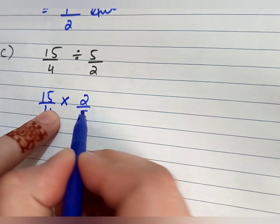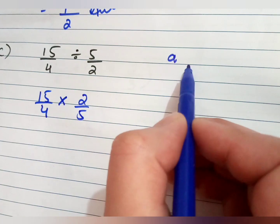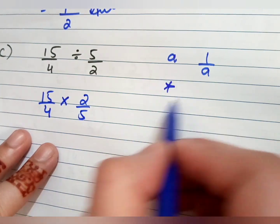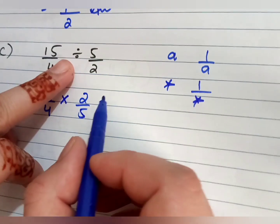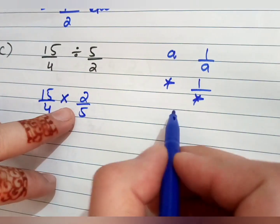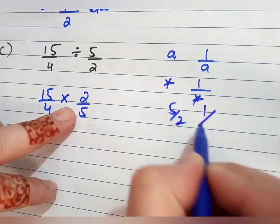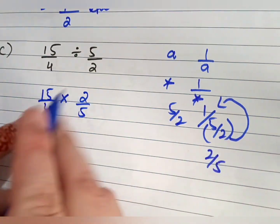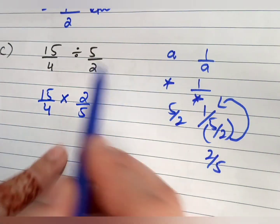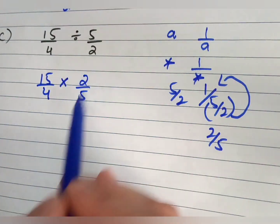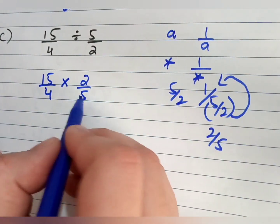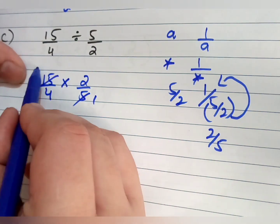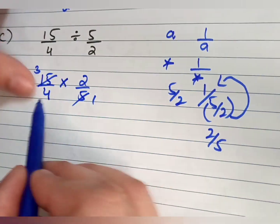What is a reciprocal? Your term gets inverted. For example, if you have 'a', its reciprocal is 1 over a. Similarly, if I have 5 over 2, its reciprocal is 2 over 5 — the numerator becomes the denominator and the denominator becomes the numerator. Now we do cross-cutting: 5 ones are 5, 5 threes are 15; 2 and 4 are in the same table — 2 ones are 2, 2 twos are 4.